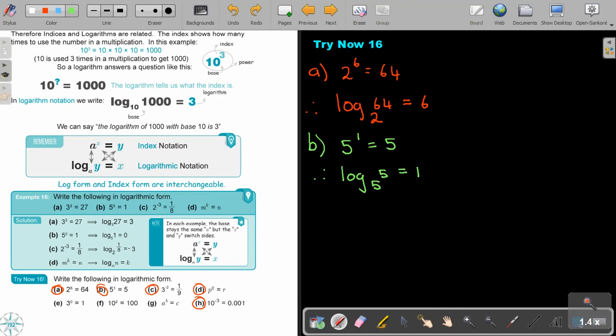Then number C, 3 to the power of negative 2 is equal to 1 over 9. So therefore log 3, 1 over 9 is equal to negative 2.